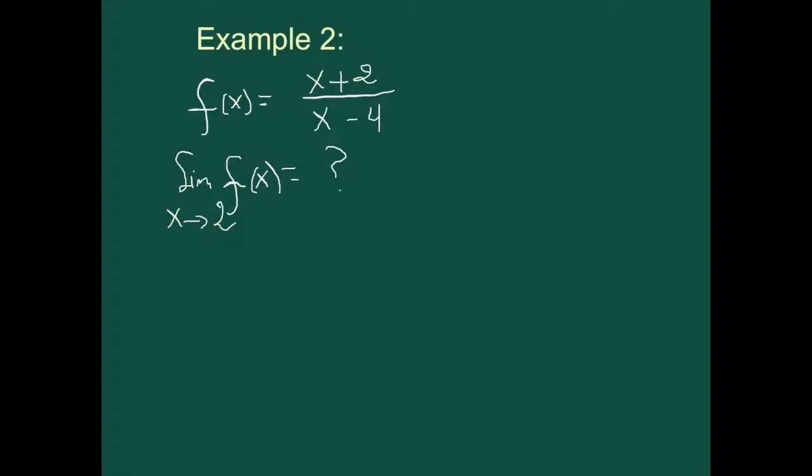If you check it out, if you plug 2 in the function, then there's no problem. So what I'm going to do is I will put the limit when x goes to 2 of f(x) is the limit as x goes to 2 of x plus 2 over x minus 4.